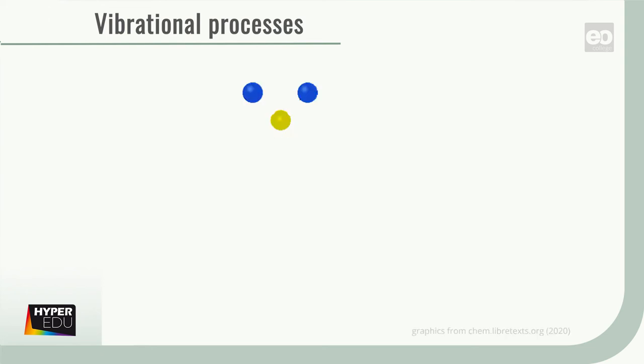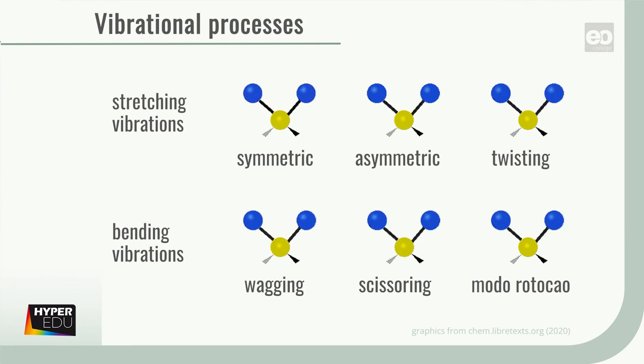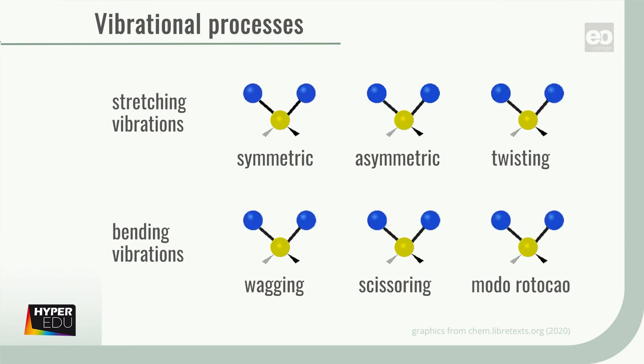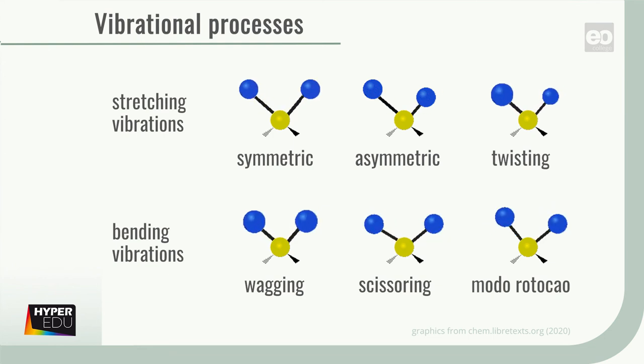In order to understand how vibrational processes happen, it is helpful to visualize atoms and bonds. Now, if you picture atoms as balls, the vibrations of atoms can be explained as springs. We differentiate stretching vibrations that can be symmetric or asymmetric and bending vibrations that can be in plane or out of plane.